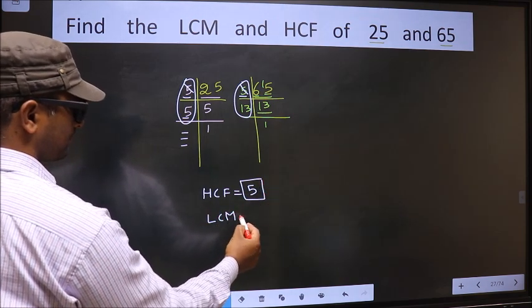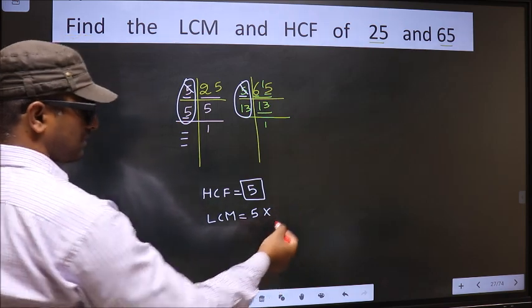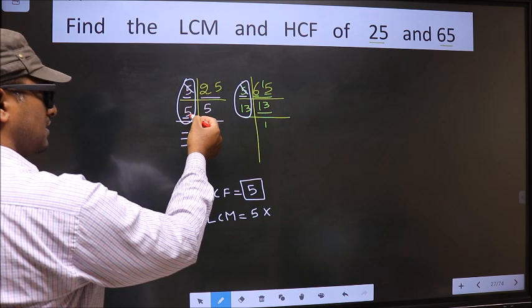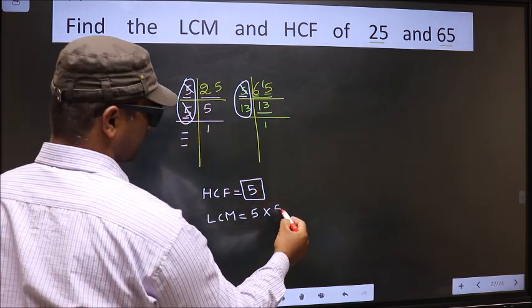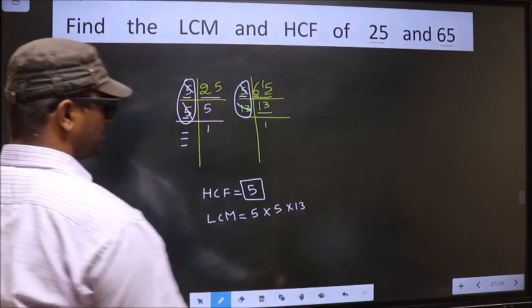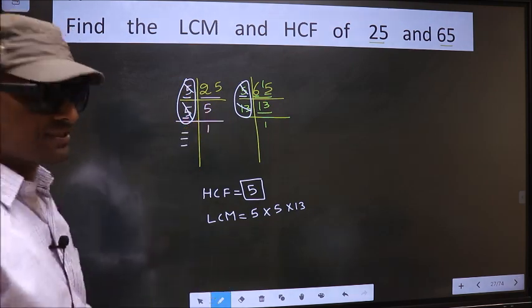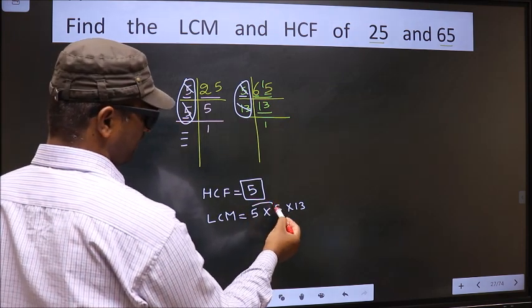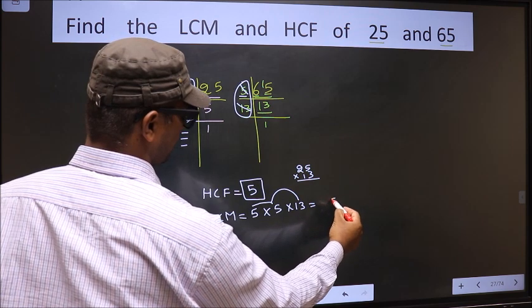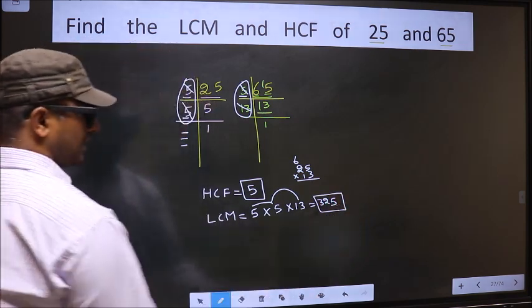Now to get LCM, whatever HCF we got, to that we should multiply by the numbers which we did not cut. What I mean is, over here this 5 is not cut. So now you cut 5 right here. Over here 13 is not cut. So you cut 13 right here. Now each number has been cut. Therefore, our LCM is 5 into 5 into 13. So 325 is our LCM.